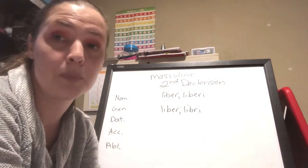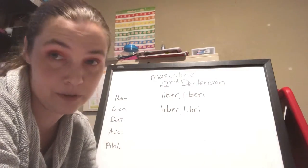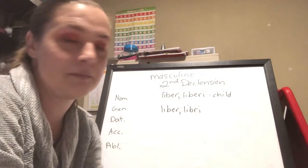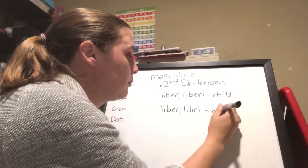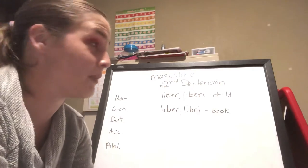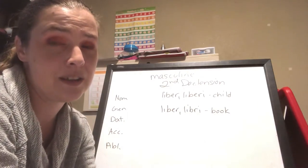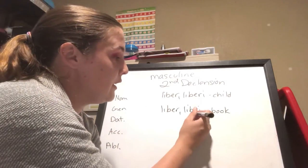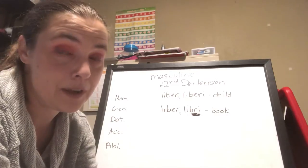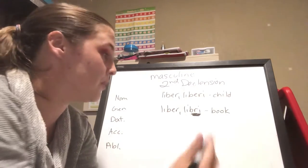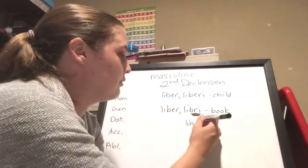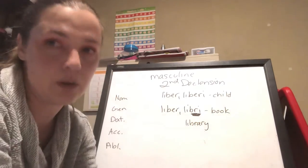These two are both second declension ER-ending masculine words. One is your word for child and one is your word for book. If you screw this up, you can go from having books in a bag to having children in a bag — it makes a difference. Notice that the E is absent from one of them. The only way you'll know how it behaves is to memorize that genitive singular.